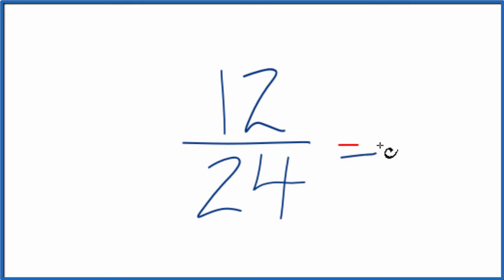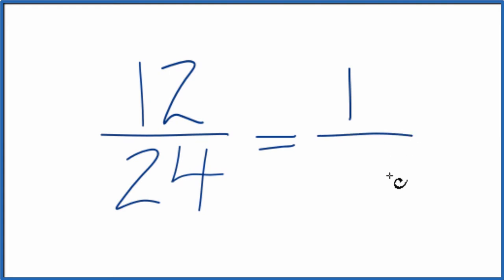So I could divide this numerator here by 12. 12 divided by 12 is 1, and then I could divide 24 by 12. 24 divided by 12, that gives me 2. And I end up with, when I simplify 12 24ths, I get 1 half.